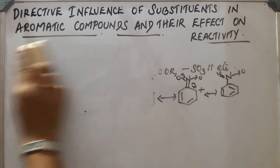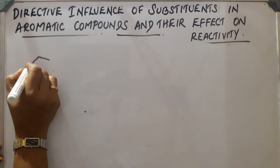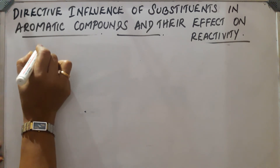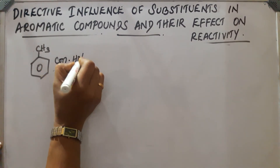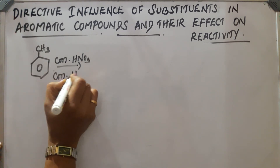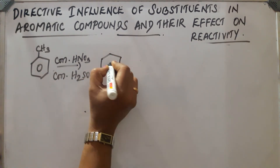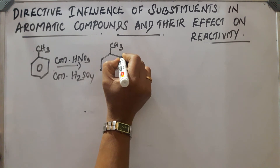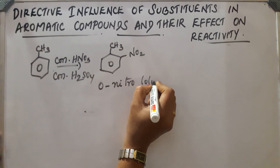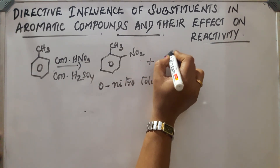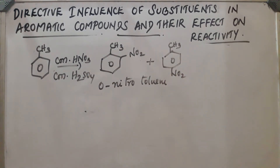Now let us take some reactions. For ortho-para directing groups, take toluene as an example. CH3 is an ortho-para directing group. On reaction with concentrated nitric acid and concentrated H2SO4 (nitrating mixture), the products obtained are ortho-nitrotoluene and para-nitrotoluene.